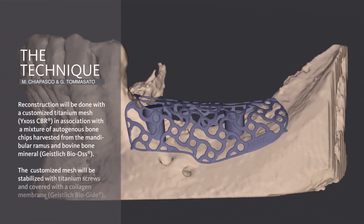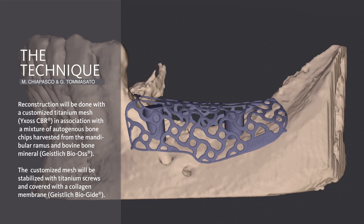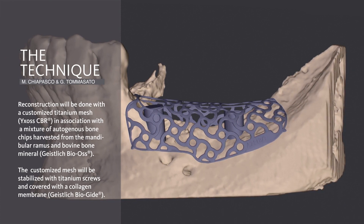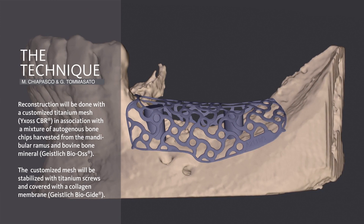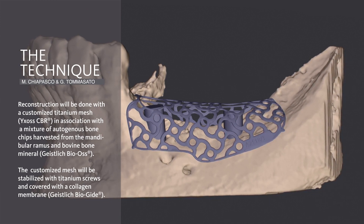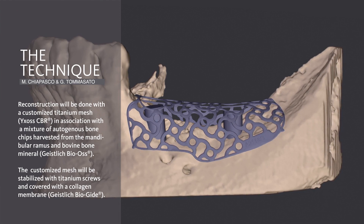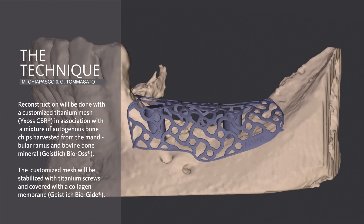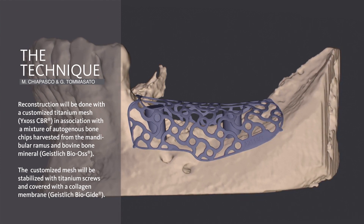The initial project of the mesh is obtained starting from 3D reconstructions of the atrophic site, thanks to DICOM files obtained from the CT scan. Once the mesh is approved, production follows immediately and the titanium mesh is delivered within two weeks.